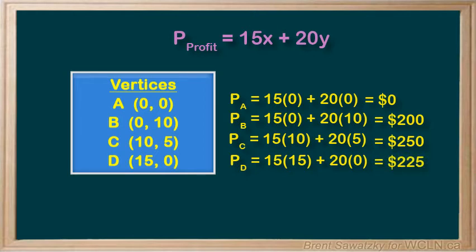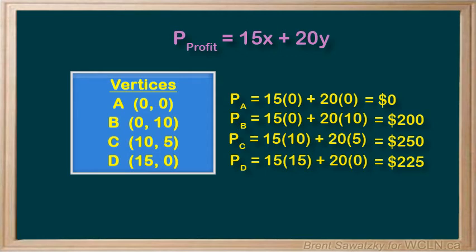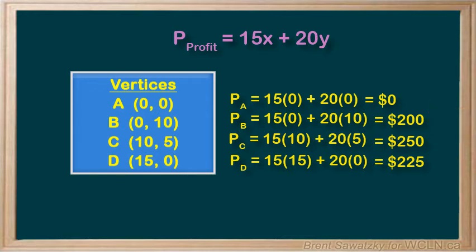Our minimum profit is $0 if Carol does no building. Our maximum profit — the more interesting result — is $250, accomplished by making exactly 10 sets of earrings and 5 necklaces. This is useful information for Carol when planning out her week.